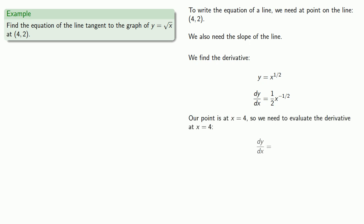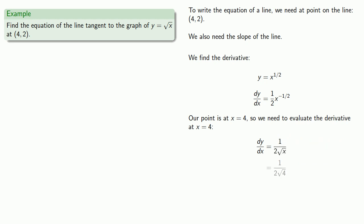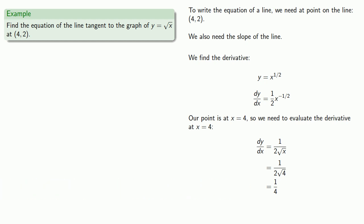It's easiest to do so if we rewrite the derivative without negative or fractional exponents. And so our derivative is going to be 1/4. So we know the tangent line passes through the point (4, 2) with slope 1/4, so its equation is going to be...